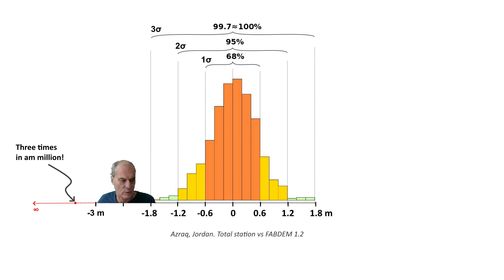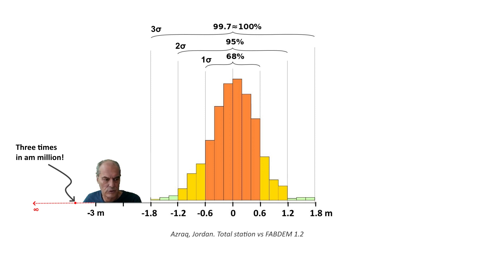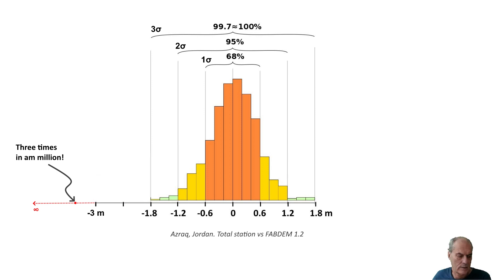We then check the double standard deviation, which means that 95 percent of all your points have an error range between plus 1.2 meters and minus 1.2 meters. Finally, the smaller your standard deviation, the better the accuracy of your points and the better your digital elevation model.